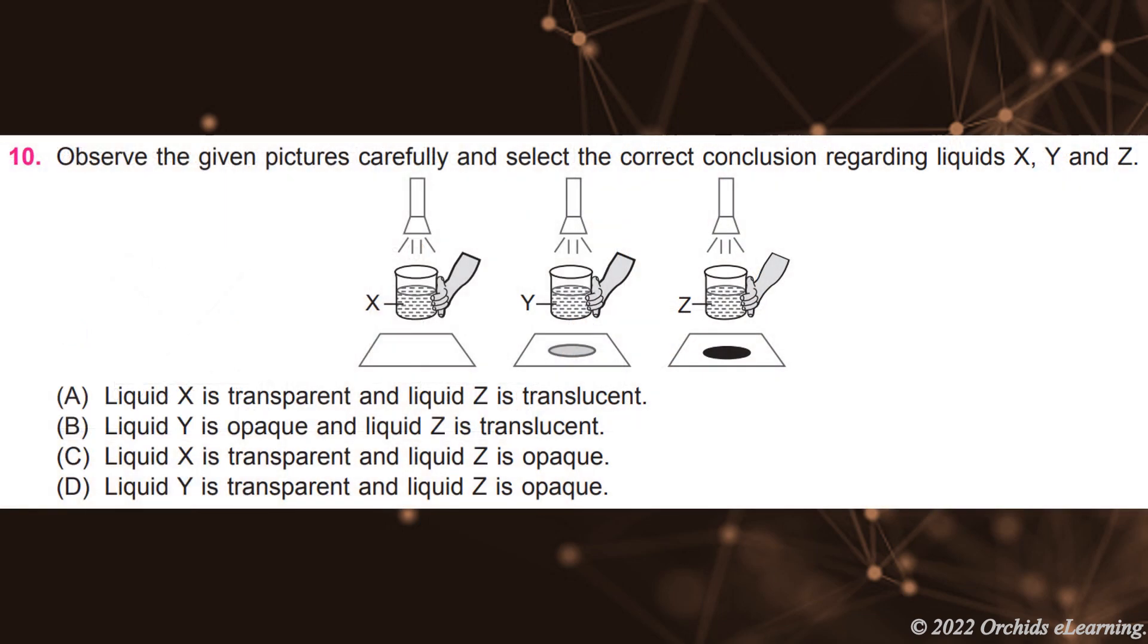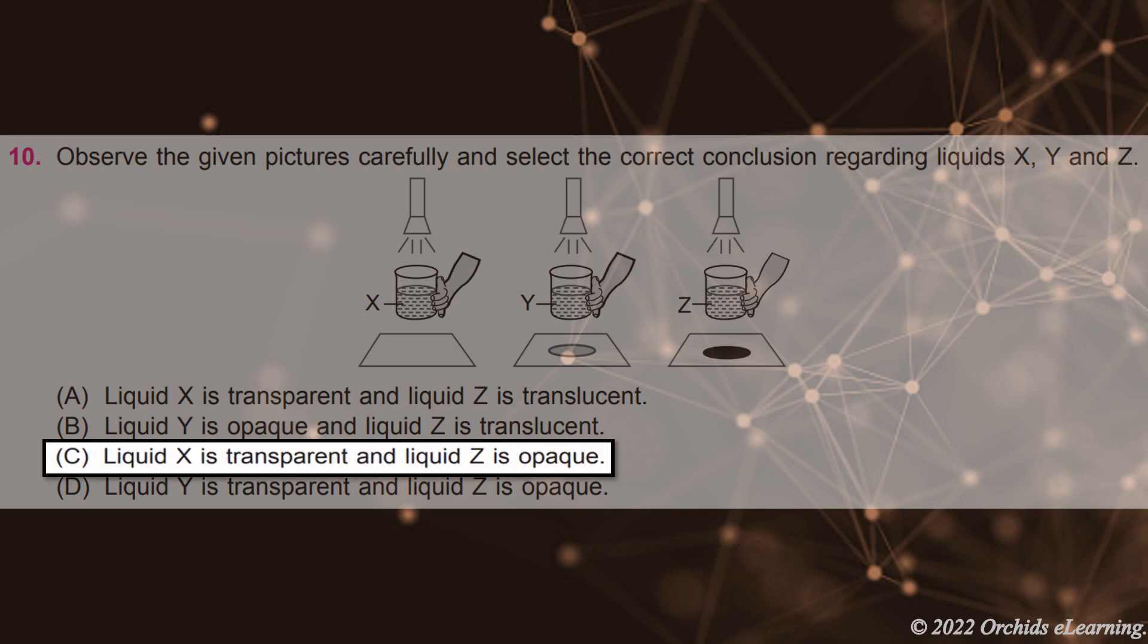Observe the given pictures carefully and select the correct conclusion regarding liquids X, Y, and Z. D. C. Liquid X is transparent and liquid Z is opaque.